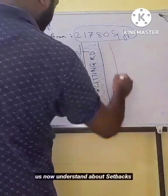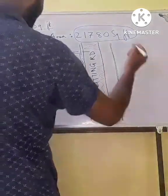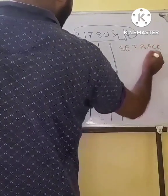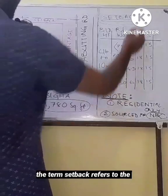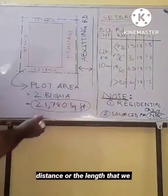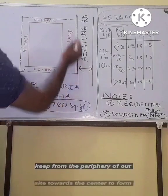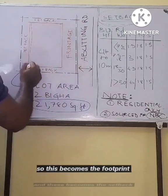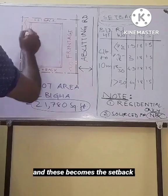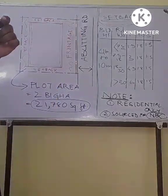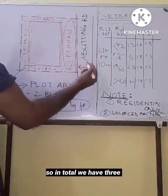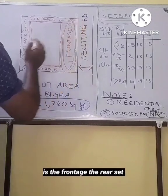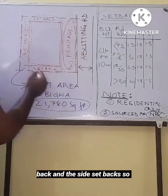On a side note, let us now understand about setbacks. The term setback refers to the distance or the length that we keep from the periphery of our site towards the center to form the footprint of our building. In total we have three different kinds of setbacks which is the frontage, the rear setback and the side setbacks.